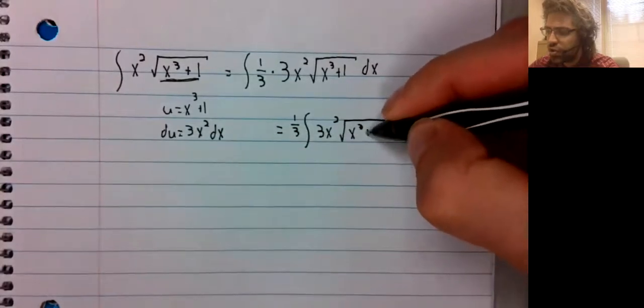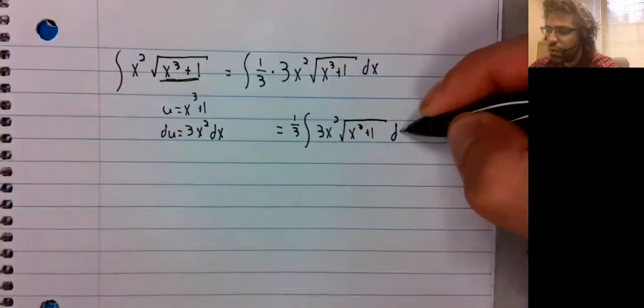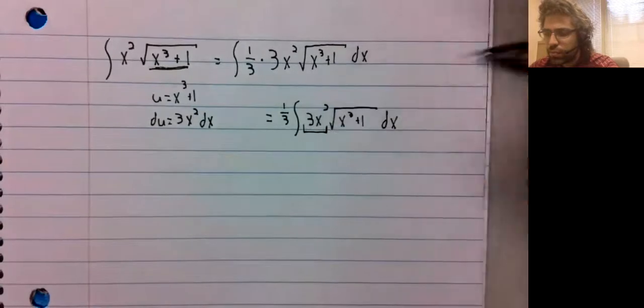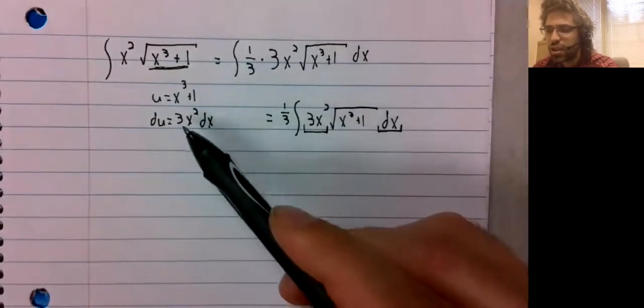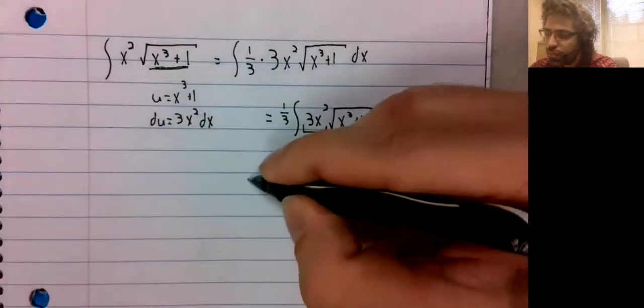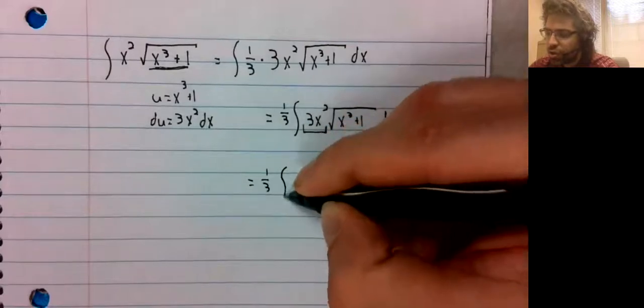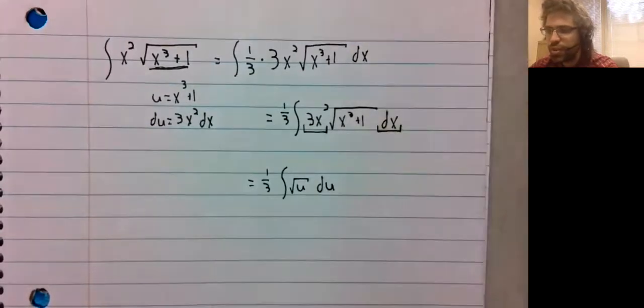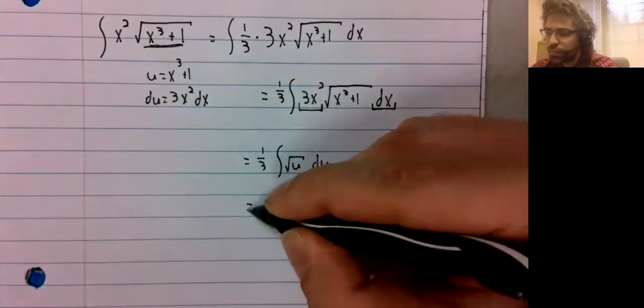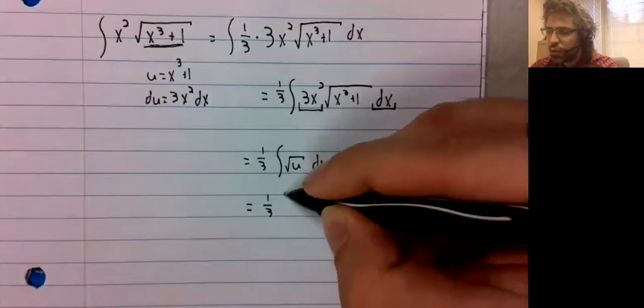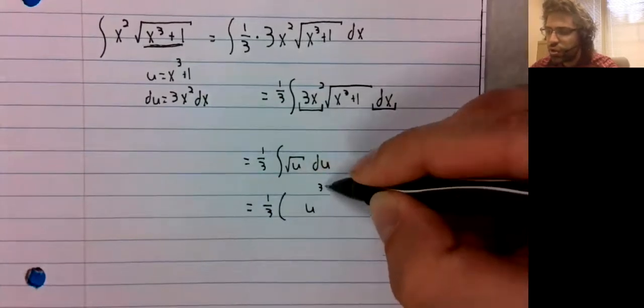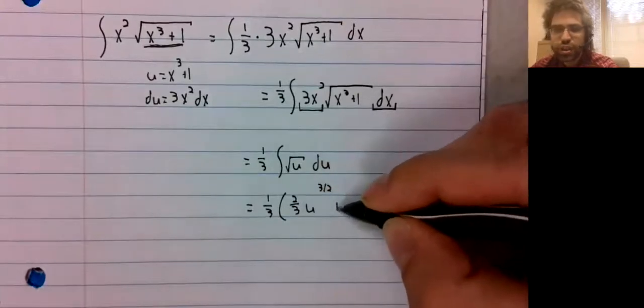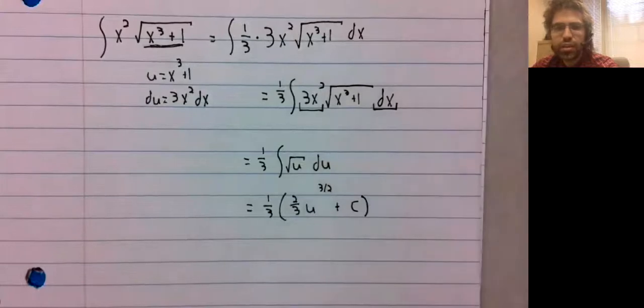And now we're golden. 3x squared dx is going to give us du. We have one third the integral of the square root of u du. Remembering that the square root of u is u to the one half. We integrate it like so.